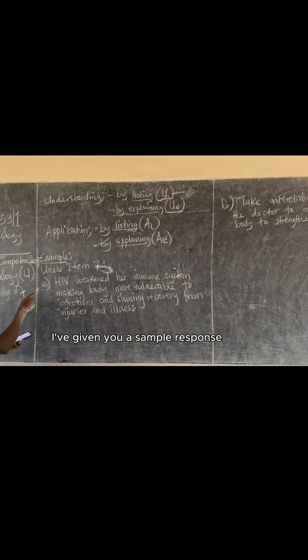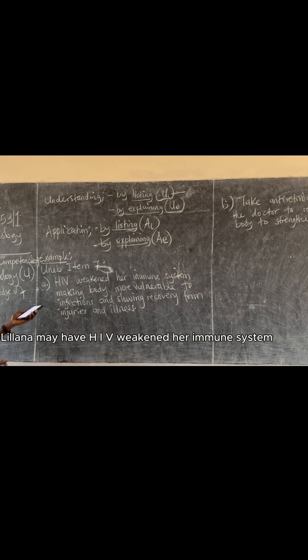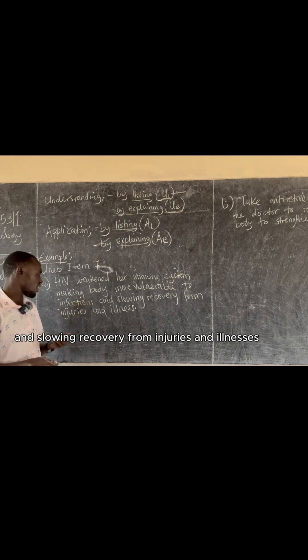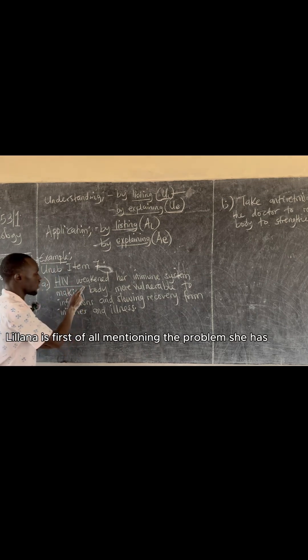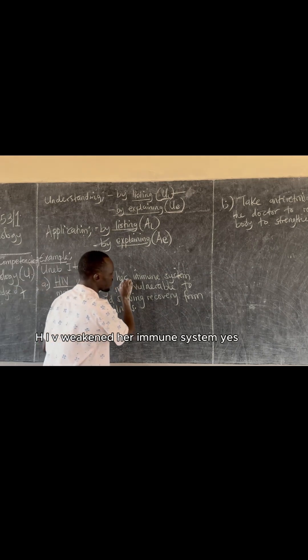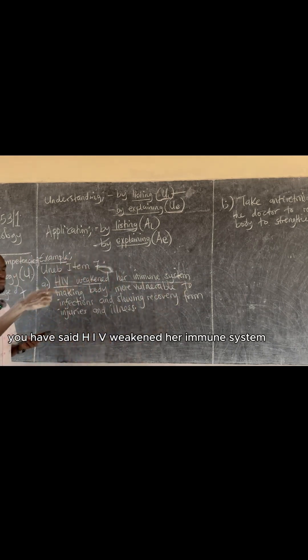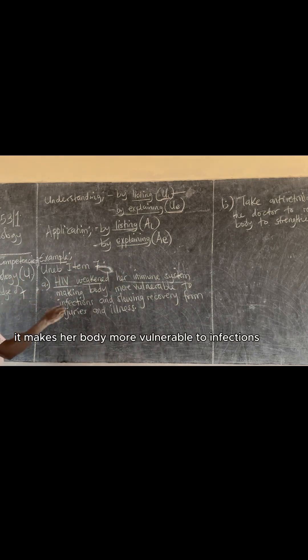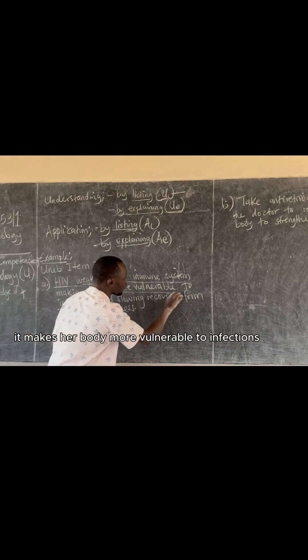In this case, I've given you a sample response. The learner may have HIV weakened her immune system, making her body more vulnerable to infections and slowing recovery from injuries and illness. The learner is first mentioning the problem she has — the problem is HIV. What did HIV do? HIV weakened her immune system. And so what? It makes her body more vulnerable to infections and slows down recovery.